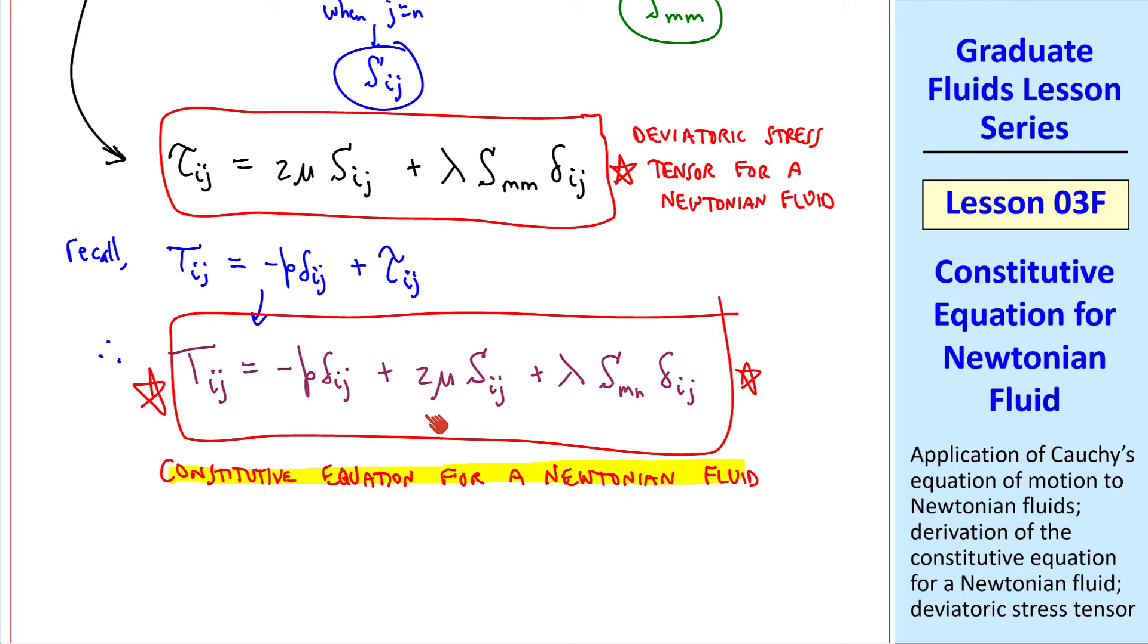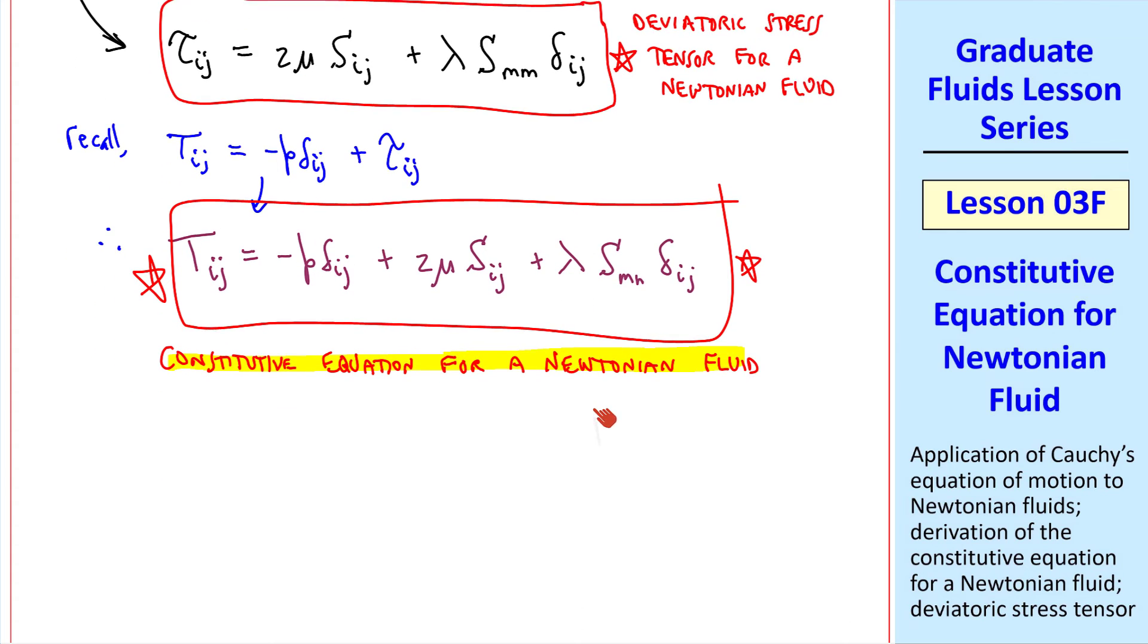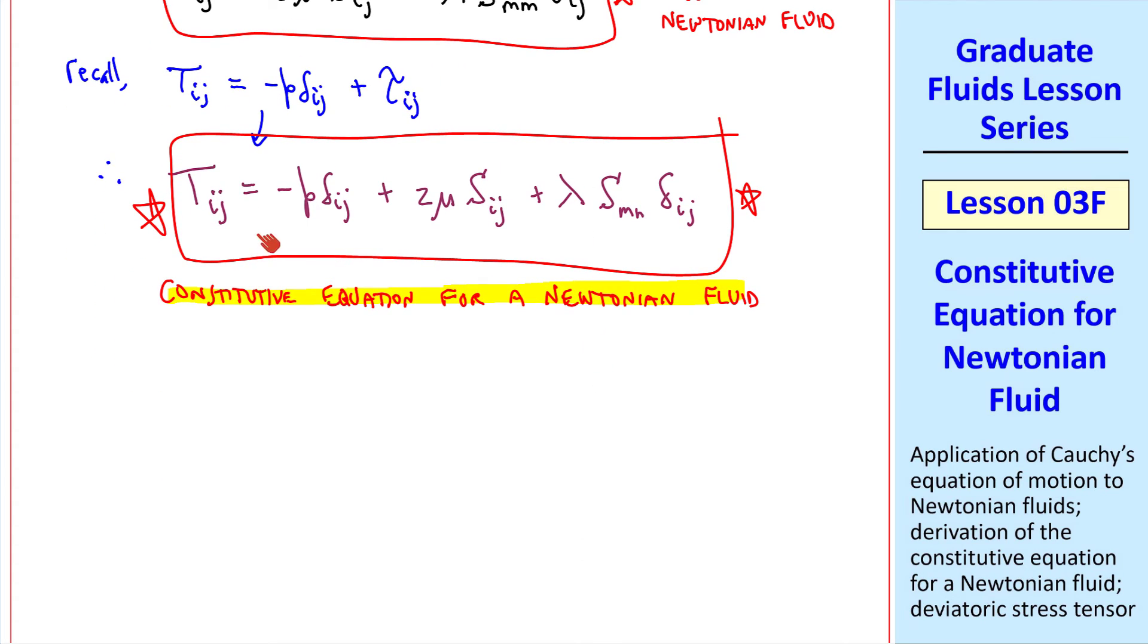Finally, the full stress tensor was negative p delta ij plus the deviatoric part tau ij. So finally we have tij is negative p delta ij plus 2 mu sij plus lambda smm delta ij. This is now our constitutive equation for a Newtonian fluid. Notice that we've gone from 81 original coefficients now to 2 mu and lambda.